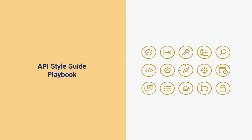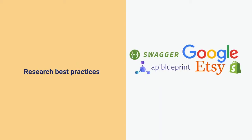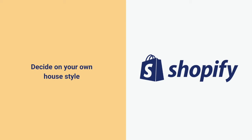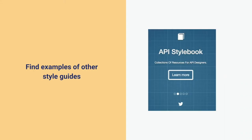So a little bit about the playbook we took to get here. Definitely research best practices — go check out what everybody is doing — but make sure you end up deciding on your own house style. This is not going to be the way that everyone has to document their APIs; this is something that will work for you. You can even publish this publicly and just say, this is our house style, this works for us, and if it's helpful to you too, that's great. Find examples of other style guides — a pro tip is that often in API design guides there's a section on documenting APIs, and there are quite a lot of API design guides available. That was a great resource when I got stuck on things.